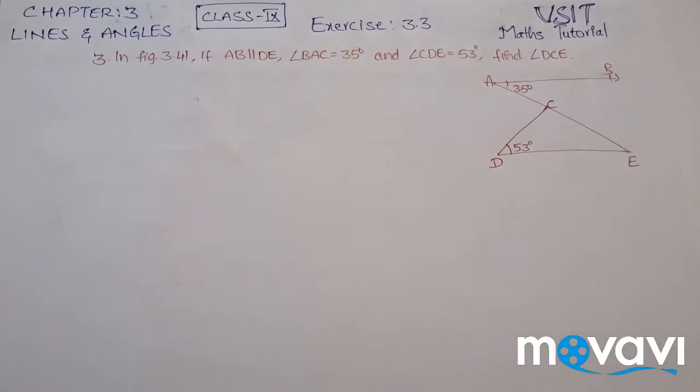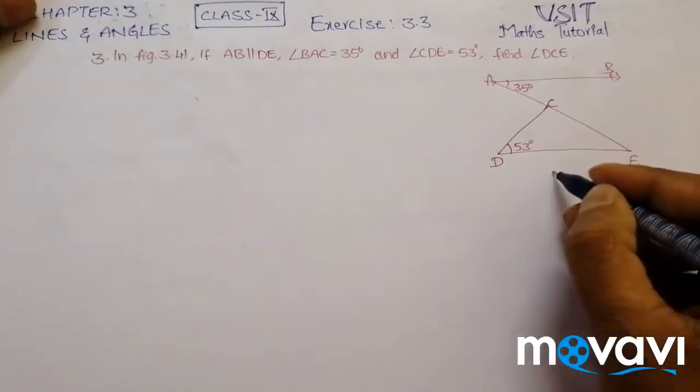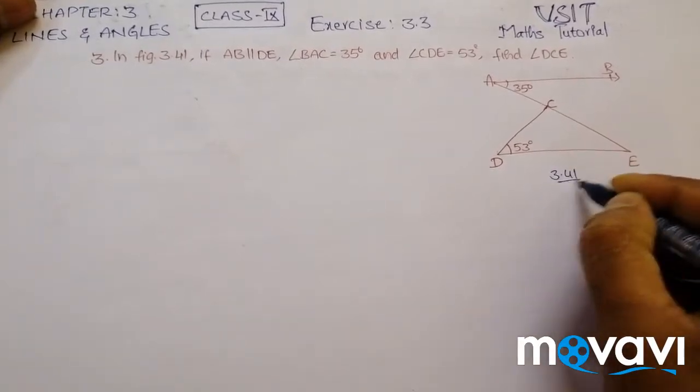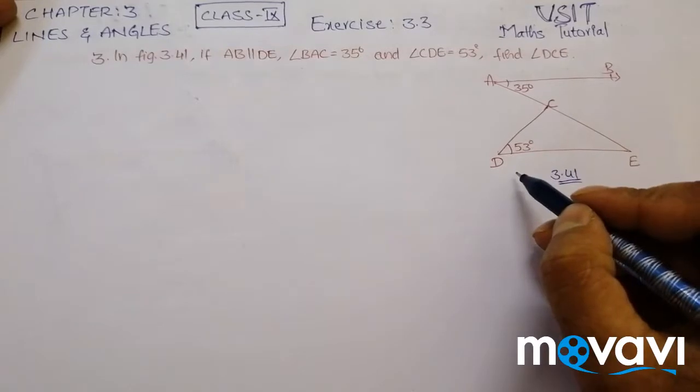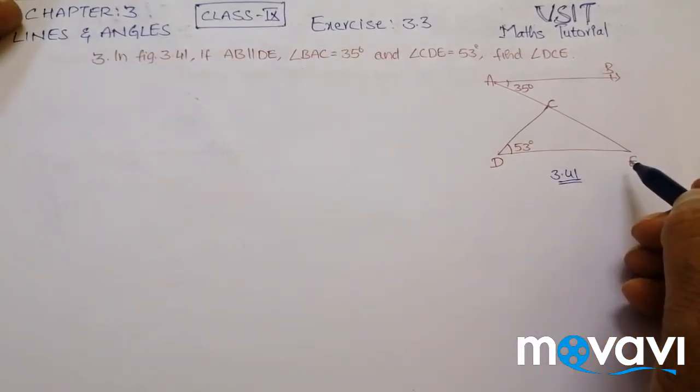This is the third problem of exercise 3.3 of lines and angles of class 9. The question given here is in figure 3.41, that is this picture 3.41. If AB is parallel to DE and angle BAC